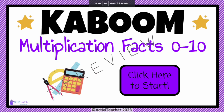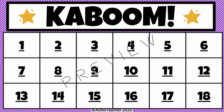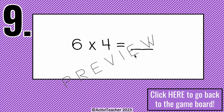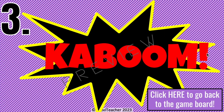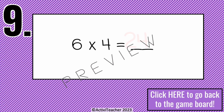Lastly, I have Multiplication Kaboom — a really fun game. You make two to four teams of students taking turns. Each team chooses a number, and the slide will either show a math problem or a kaboom. If the team gets a kaboom, they lose their turn. If they solve the math problem correctly, they get a point; if wrong, they don't. For example, team one picks number nine — six times four equals twenty-four — correct means a point. Here's an example of a kaboom slide, and I'll flip through so you can see some of the math problems.